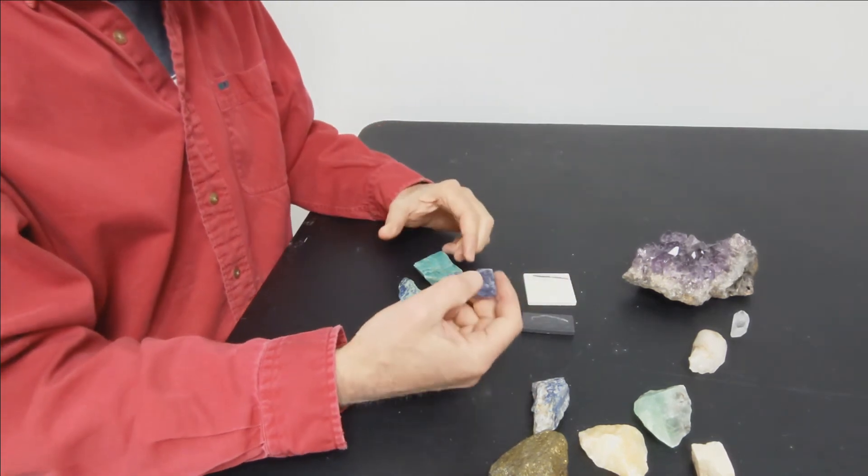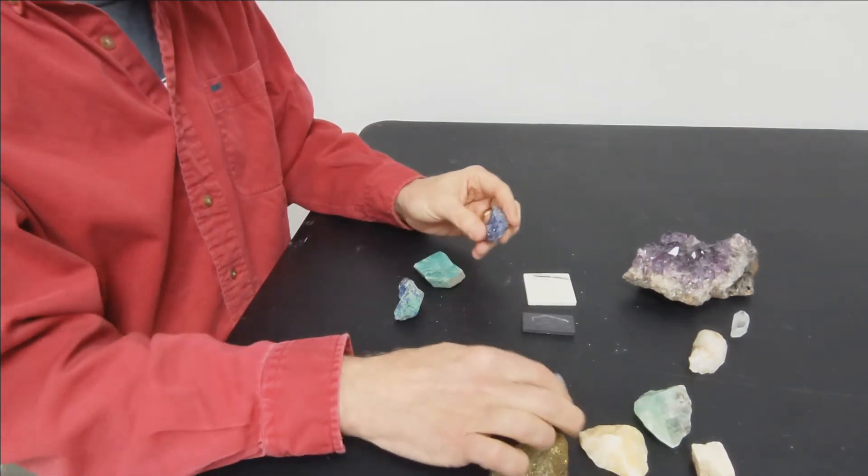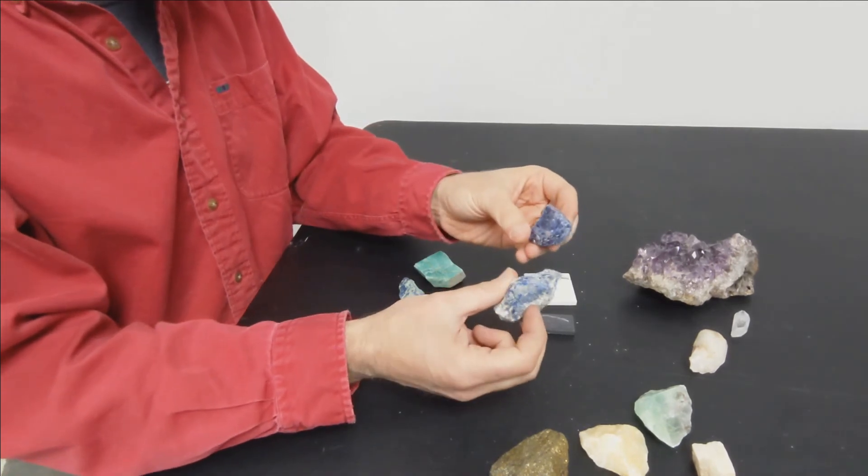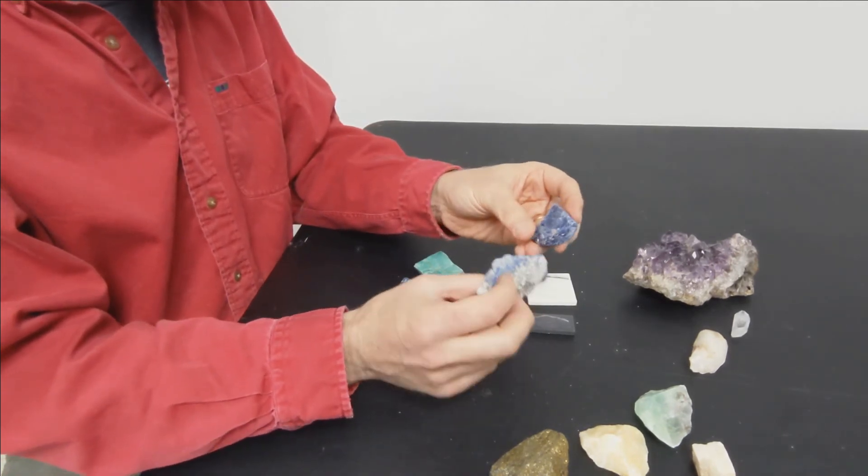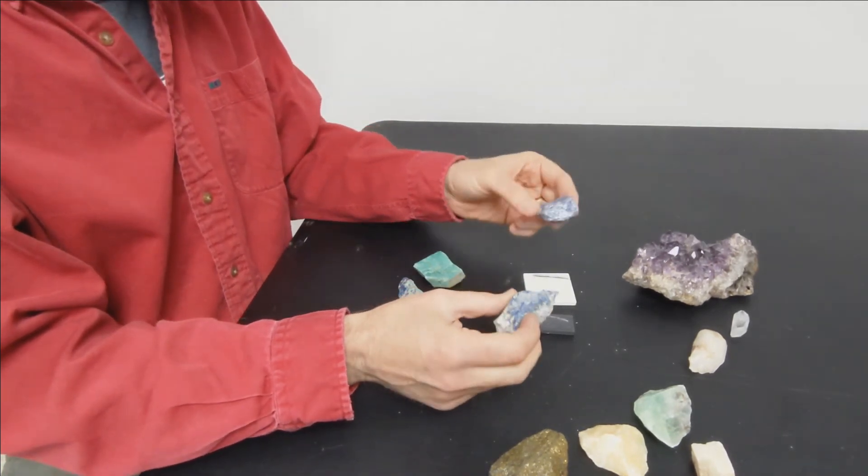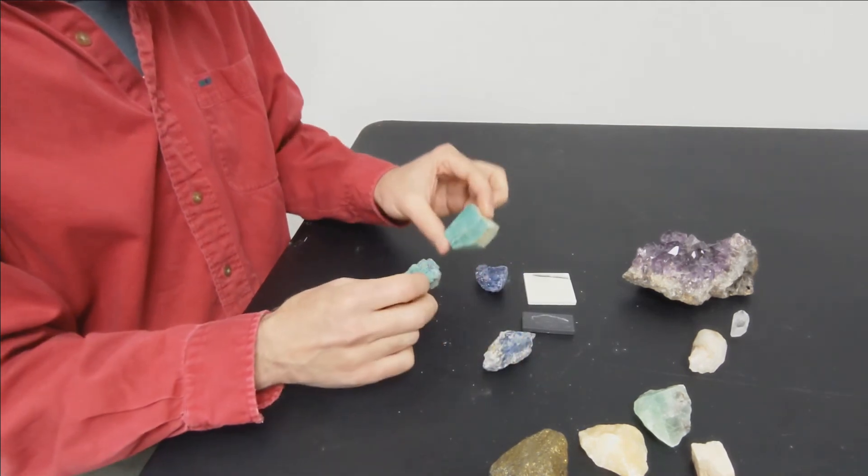So here again, we can see how streak may help us identify the difference between two minerals that have a very similar appearance. These two blue minerals have very different streaks, as do these minerals.